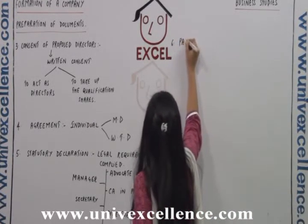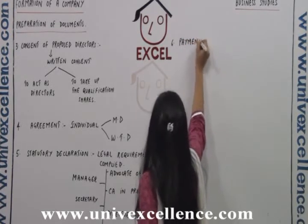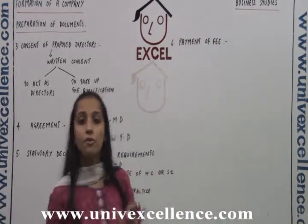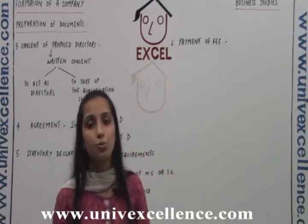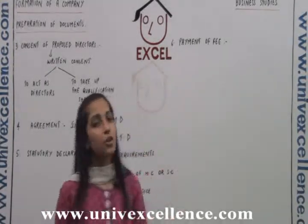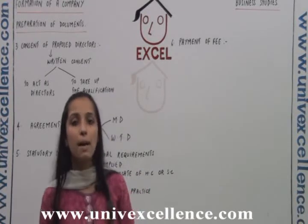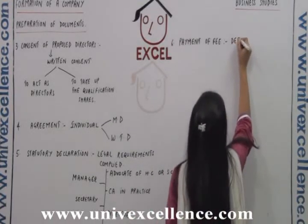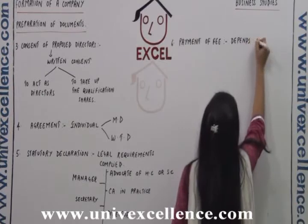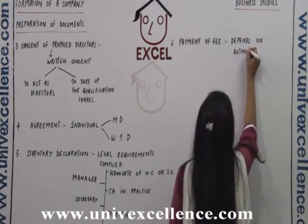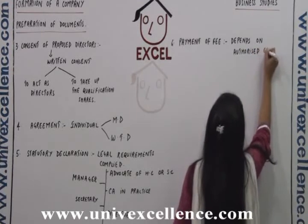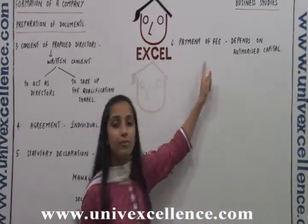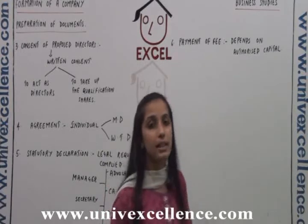The last document is payment of fee. A proof of the fact that the fee has been paid has also to be prepared. The fee depends on the authorized capital of the company. To form a company, one has to pay a fee, and a proof that the fee for the registration of the company has been paid must be provided.